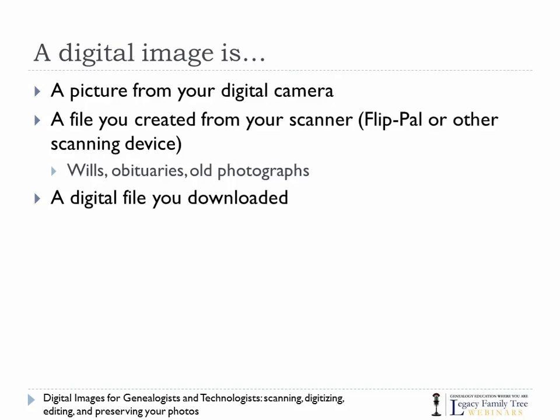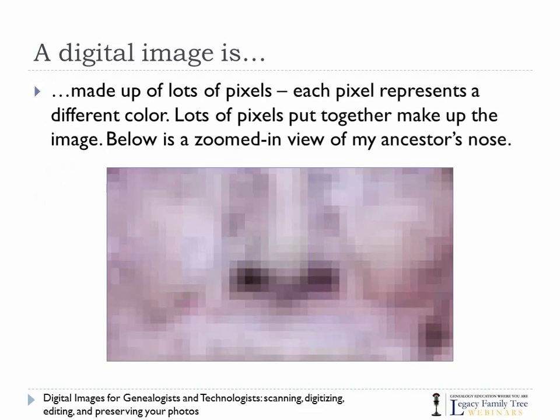Let's start with the very basics. When I'm referring to the term 'digital image,' I'm talking about a picture from your digital camera, a file created from your scanner, your FlipPal, or other scanning device. This is not just photographs — anything like a piece of paper, a will, or an obituary that you place on your scanner becomes a digital file. A digital image could also be a file downloaded from the Internet. Digital images are made up of lots of pixels, each with a different color, and when you put them all together you have a digital image.